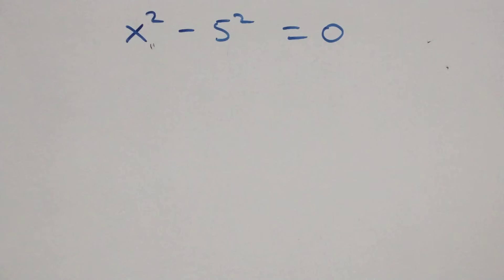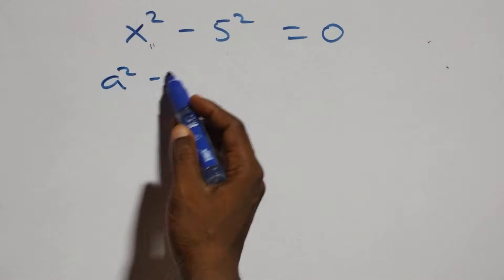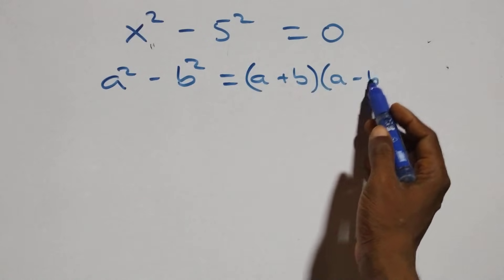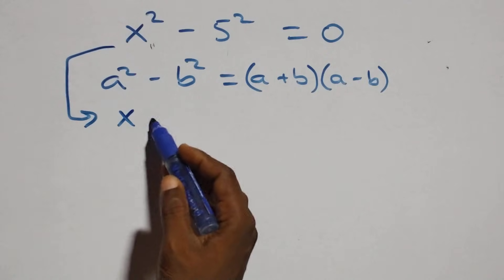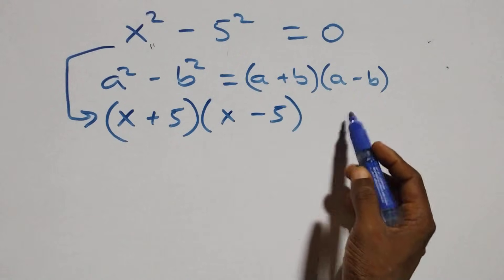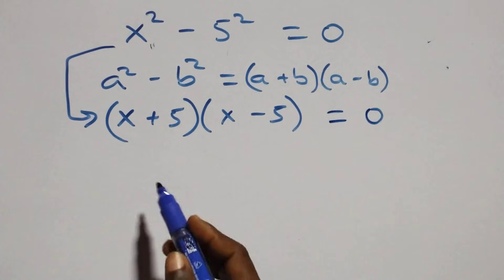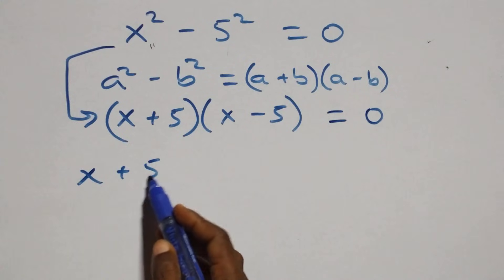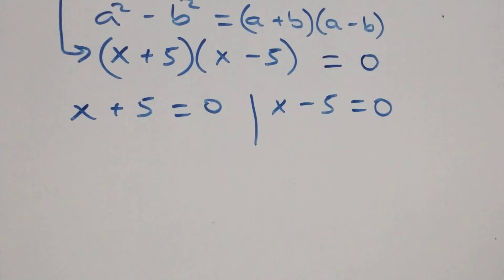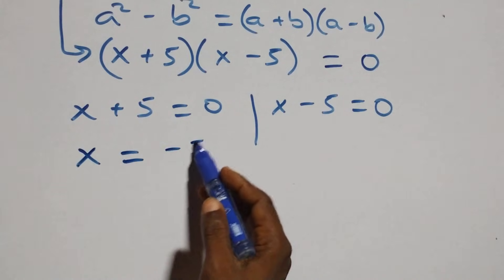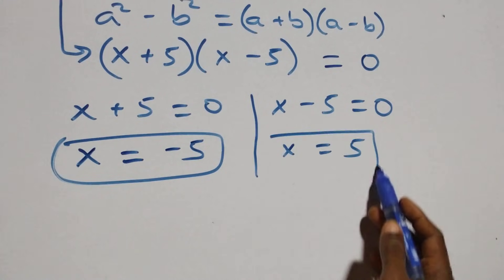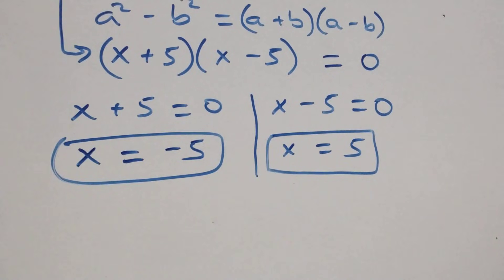Solving from the second case: a squared minus b squared is the same thing as (a + b)(a - b). This becomes (x + 5)(x - 5) equals zero. We have two possible cases: x + 5 = 0 or x - 5 = 0. Solving, x equals minus 5, which is a real solution, and x equals 5, which is also a real solution.